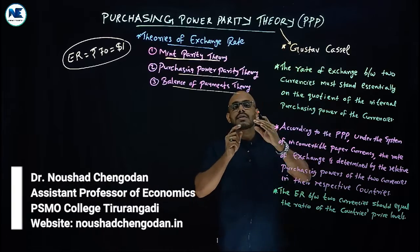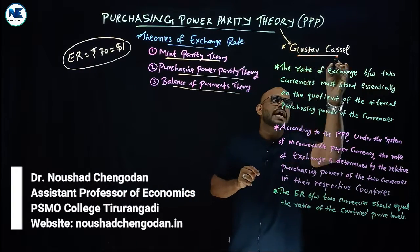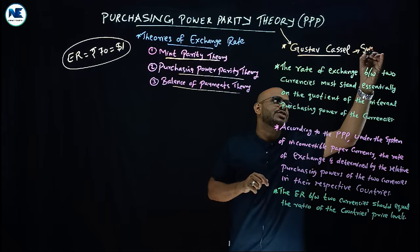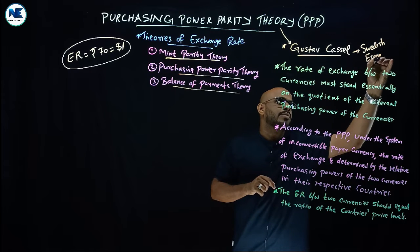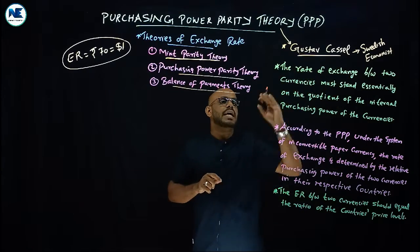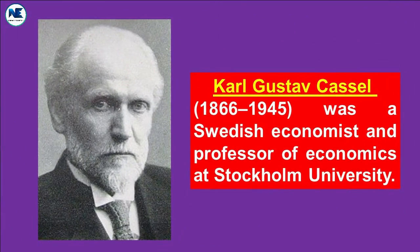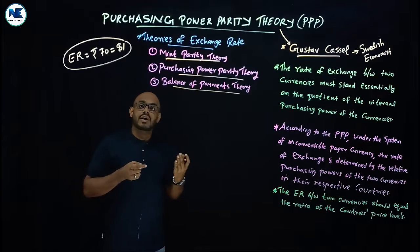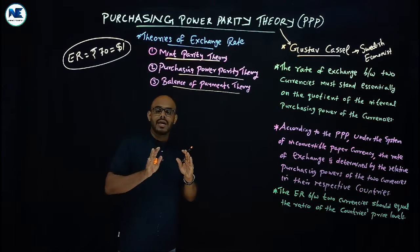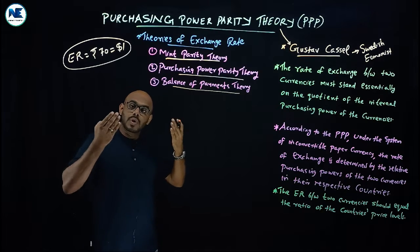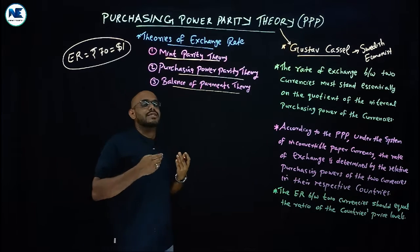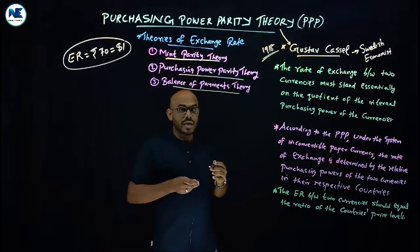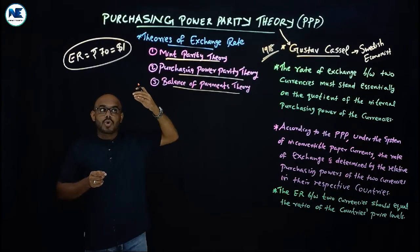This theory was elaborated and popularized by Gustav Cassel, a Swedish economist. The concepts were originally developed by earlier economists including David Ricardo, but the overall development and popularization is attributed to Swedish economist Gustav Cassel, especially around 1920.